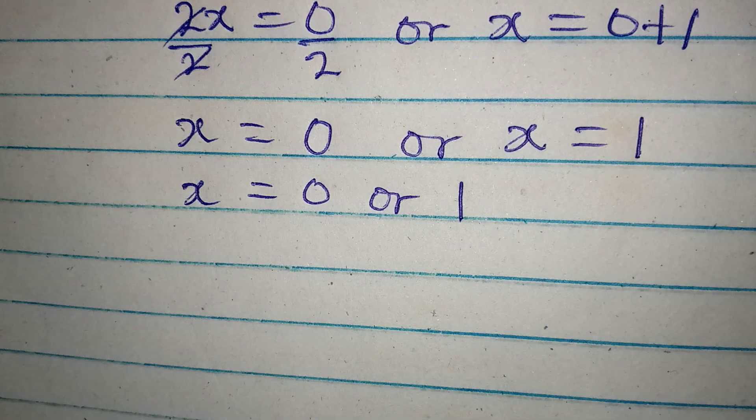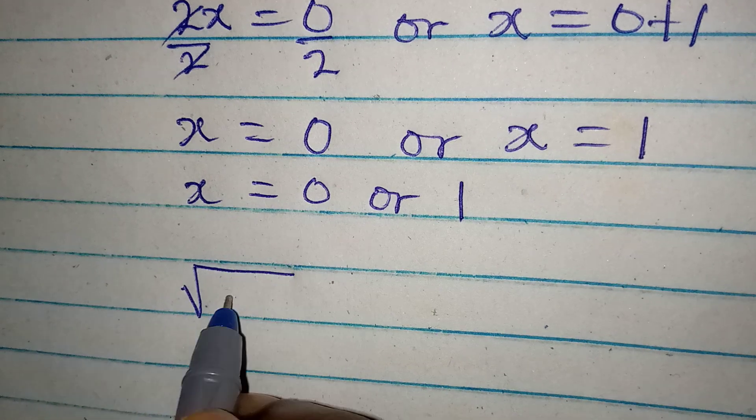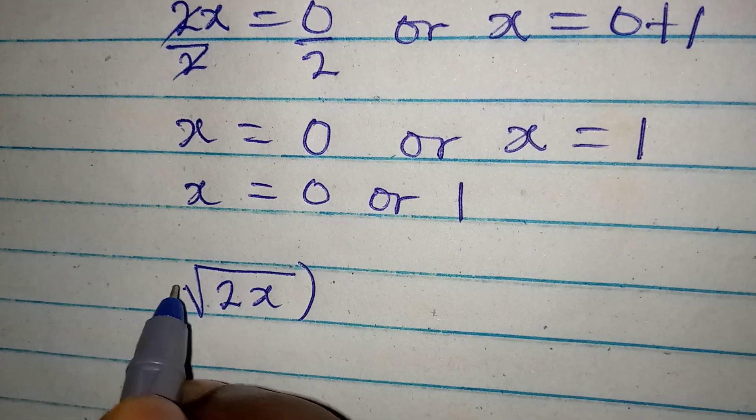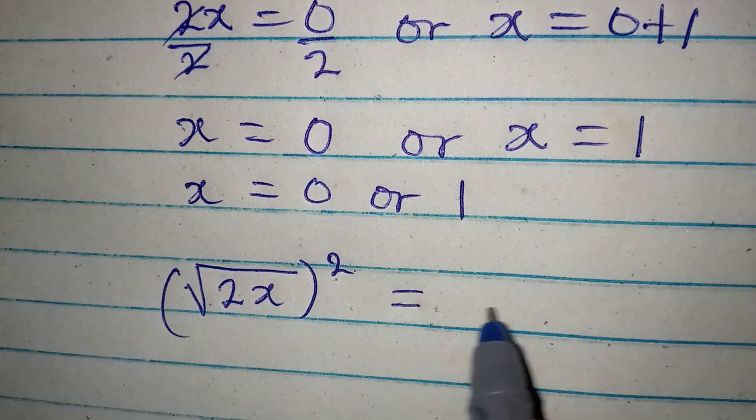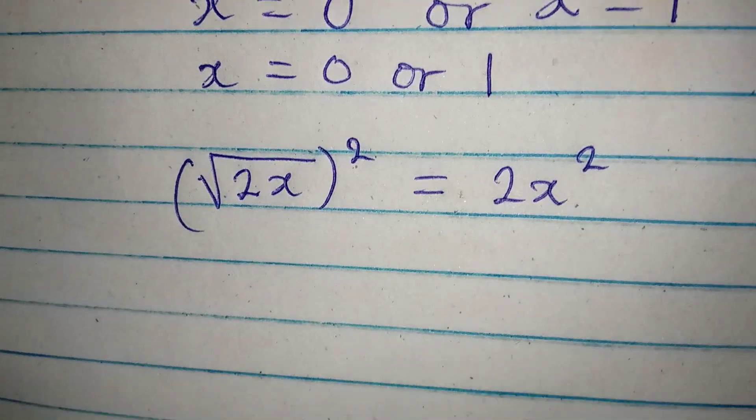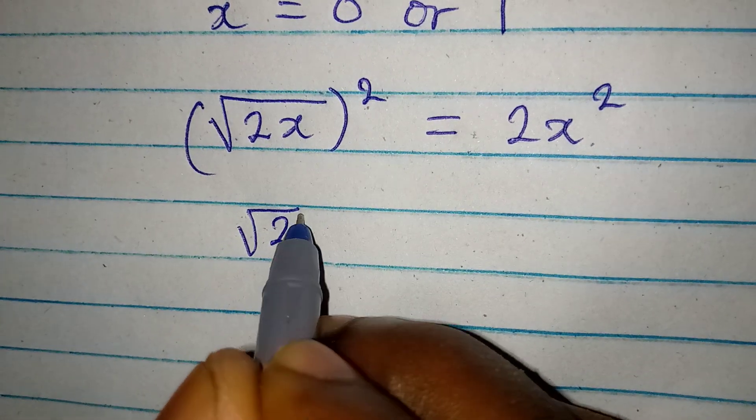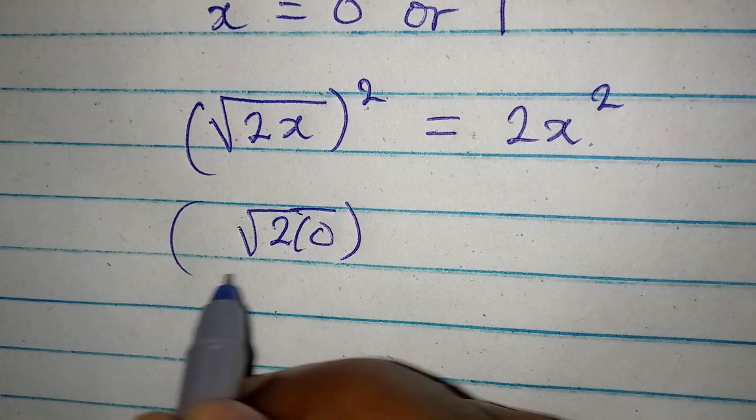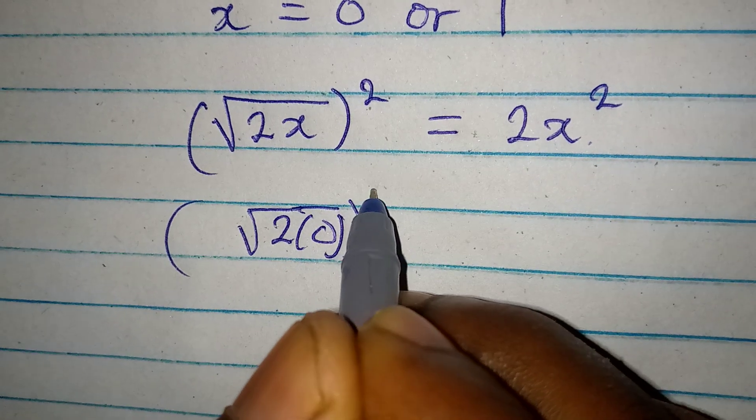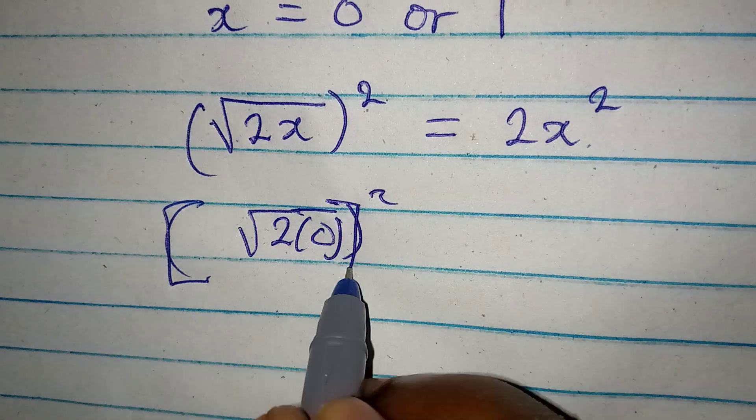Now let's put these two values into the original equation. Square root of 2x squared equal to 2x squared. If I put in 0 that means I have square root of 2 times 0, and then I will square whatever that I have.